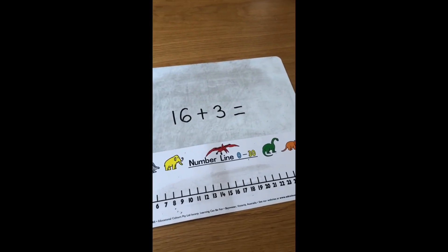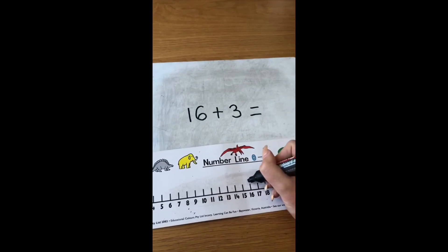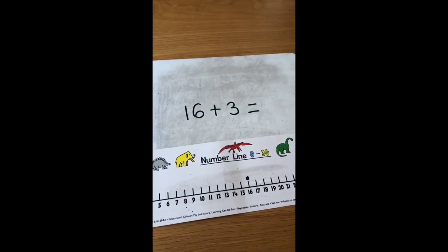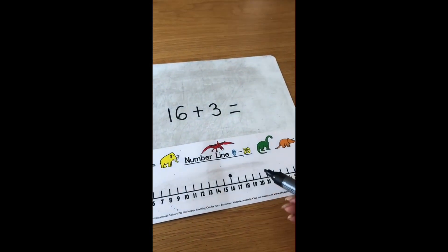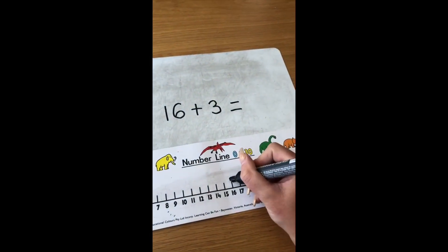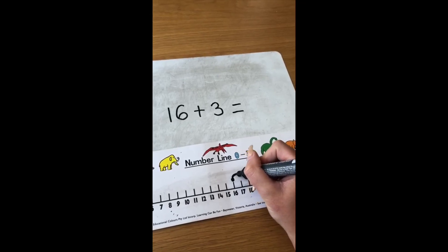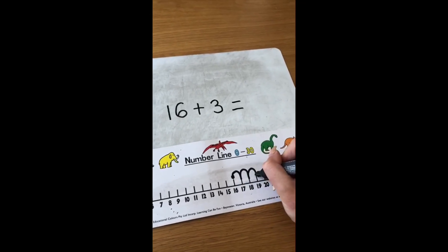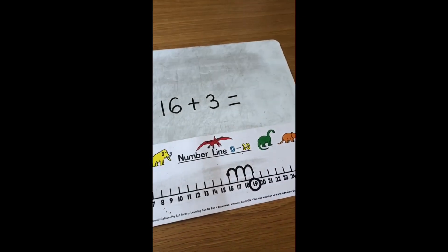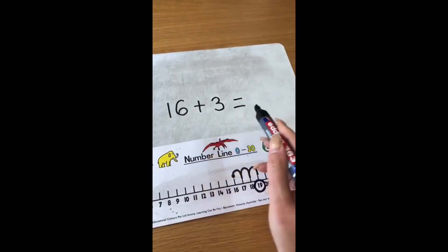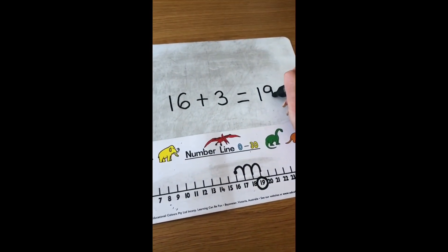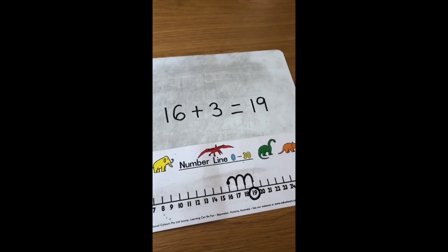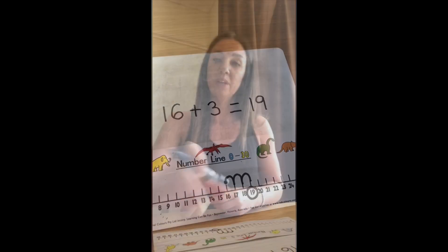So where did you start on the number line? Well done — number 16. We put three jumps and we're going up the number line. So from 16, are you ready to count with me? Add one, two, three. Which number have we landed on? 16 add three equals? Amazing — number 19. I'm going to write number 19 there. So we know 16 add three equals 19. Well done for having a really, really good go at using a number line.